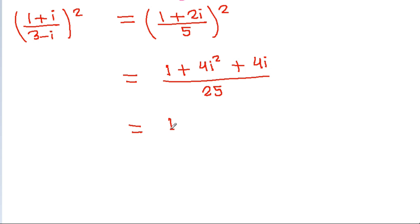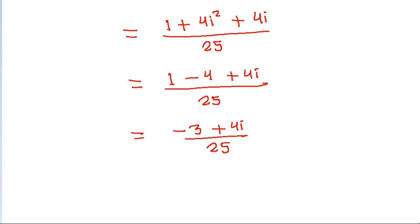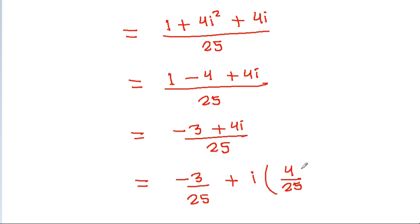And it is 1, and iota square is minus 1, so it will be minus 4, plus 4 iota by 25. And it is minus 3 plus 4 iota by 25, which gives minus 3 by 25 plus iota times 4 by 25. So the real part is minus 3 by 25.